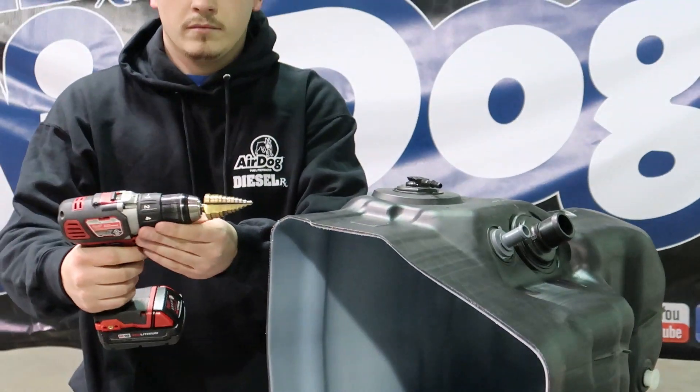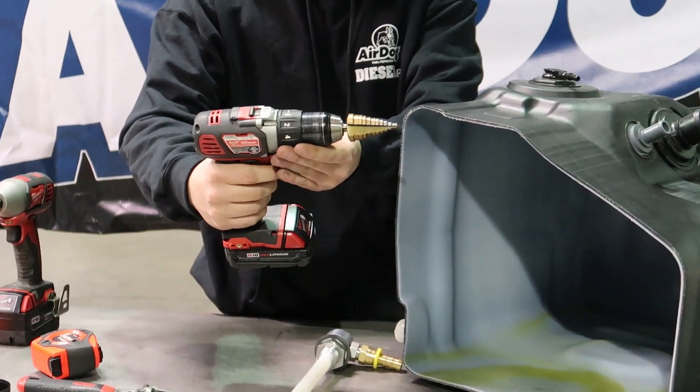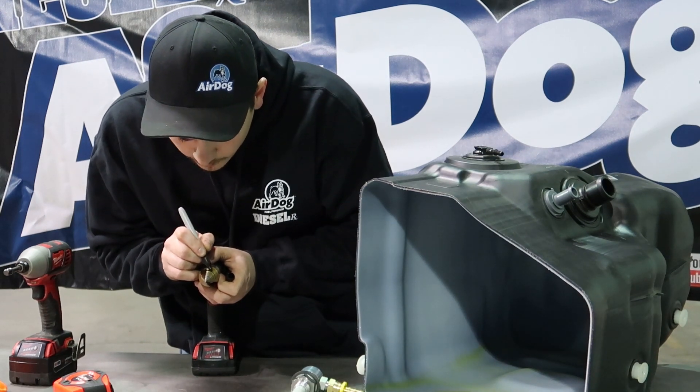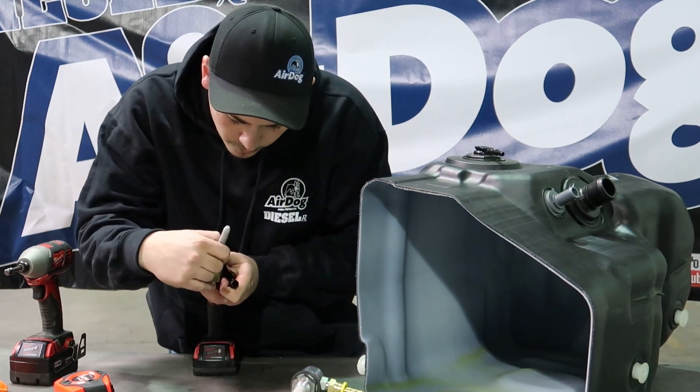We first locate a flat spot on the top of the fuel tank. We're going to use our step bit to drill a one inch hole. You can see I'm marking it with a sharpie to verify that I don't go too deep with the step bit.